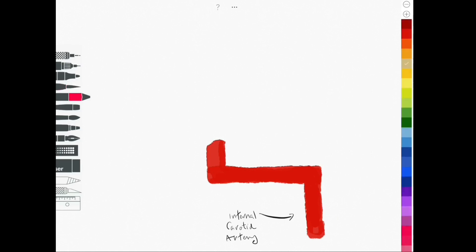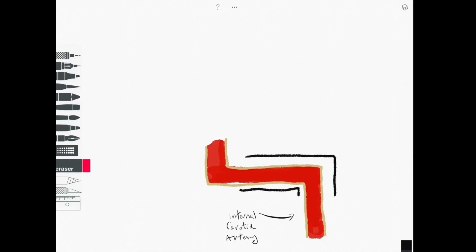Now the internal carotid artery begins life outside the cranium and is a branch of the common carotid artery. The common carotid artery divides into two at the upper border of the thyroid cartilage. One of those branches will be our internal carotid artery, the other will be the external carotid artery.